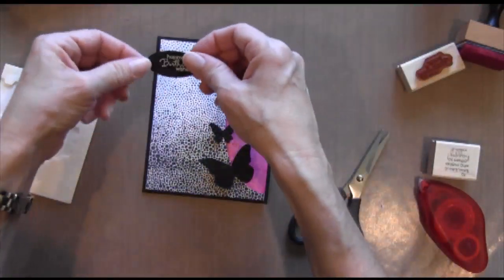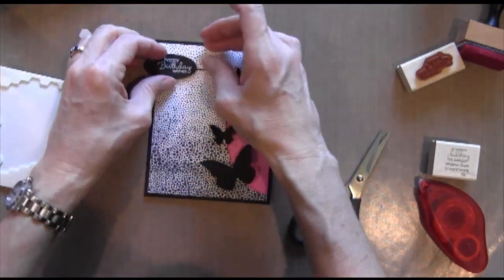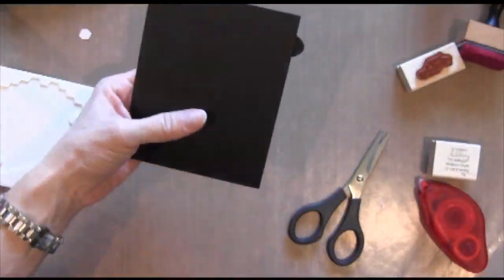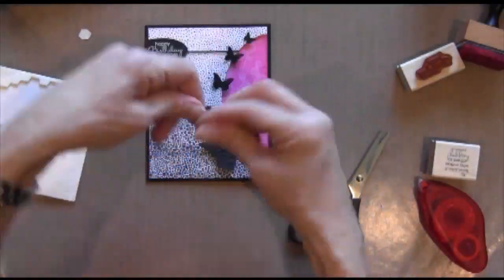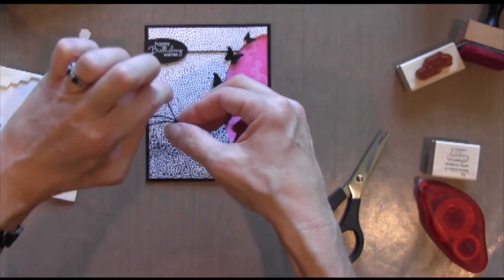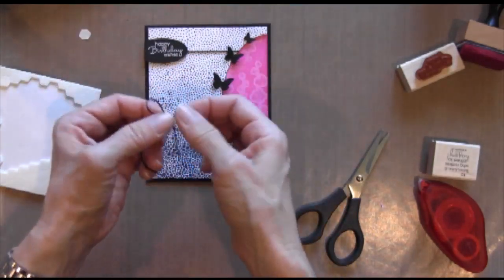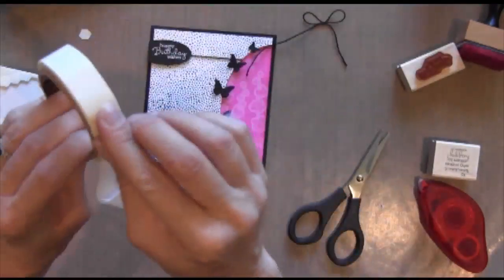My sentiment is going to be adhered with dimensionals as well, and then I'm going to trim off that edge there. That way I get kind of a half circle on one side and a half circle on the other side, and it balances out the elements on my card.